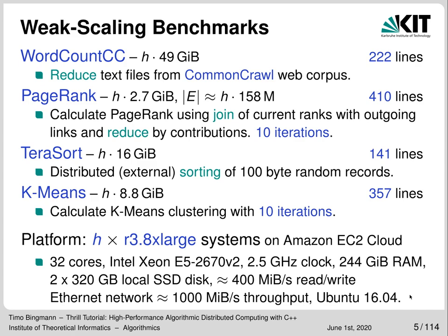Instead of immediately starting with details on Thrill, I will now show you some benchmarks comparing it against Apache Spark and Apache Flink. The next slides show weak scaling results on four microbenchmarks: WordCount, PageRank, TerraSort and K-Means. WordCount is a simple distributed reduction on strings from text files to count all distinct words — in this case using parts of the common crawl web corpus as input.